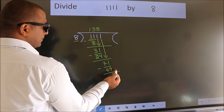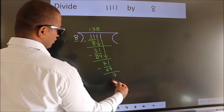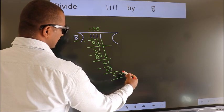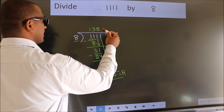No more numbers to bring down. So, we stop here. This is our remainder. This is our quotient.